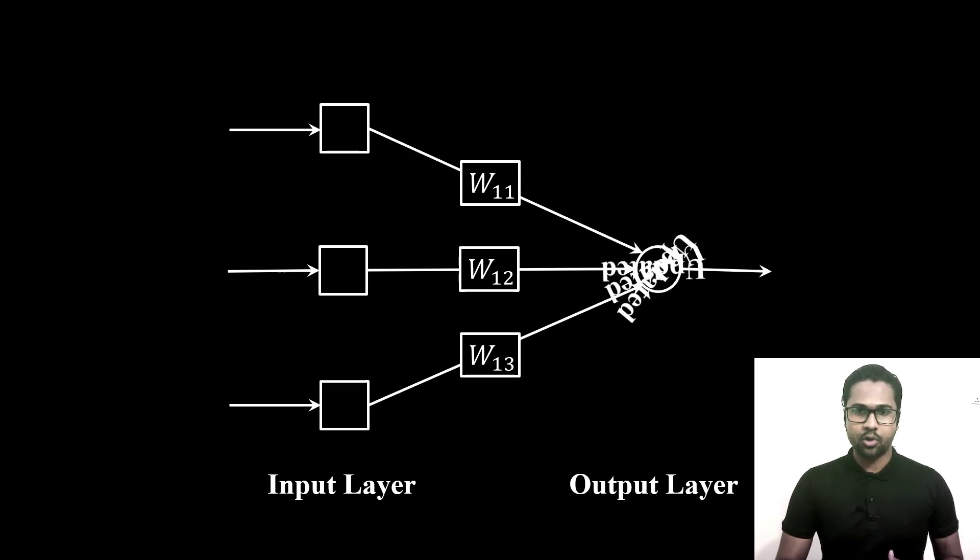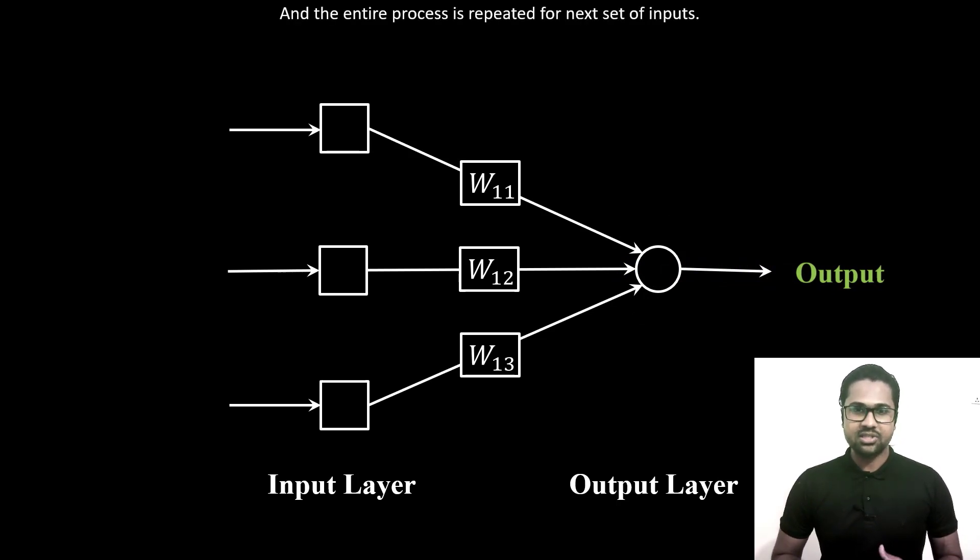These updated signals go to the output node. The output node processes the signals and generates the output, and this entire process is repeated for the next set of inputs.